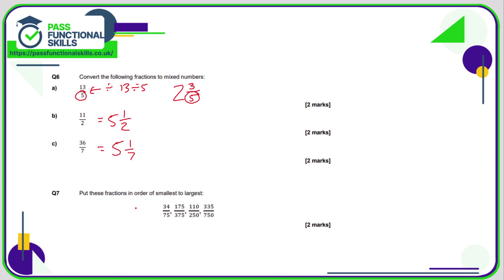Question seven: we need to put these fractions in order from smallest to largest. The issue is they all have different bottom numbers, so we need to turn them into equivalent fractions with the same bottom number. We look at the one with the biggest bottom number and hope the others can all go into 750. 34 over 75 is the same as 340 over 750, multiplying the top and the bottom by 10.